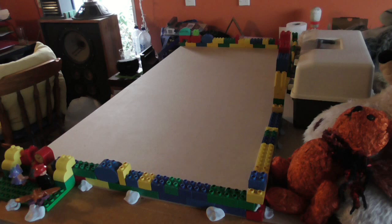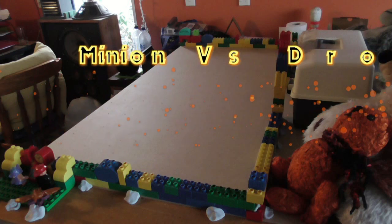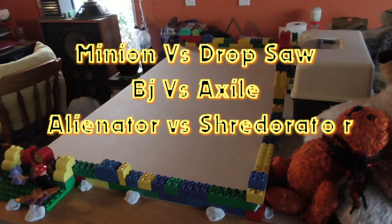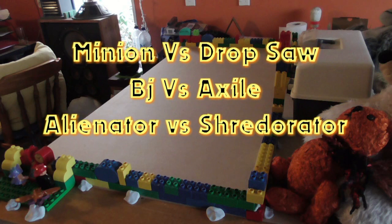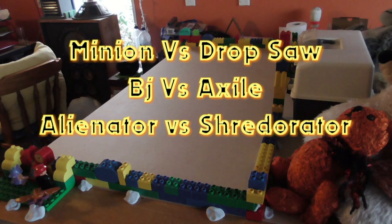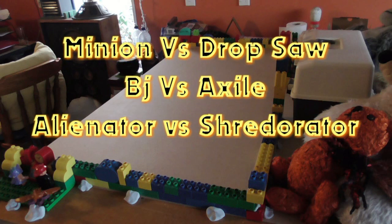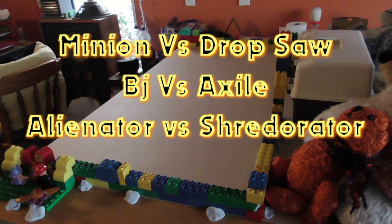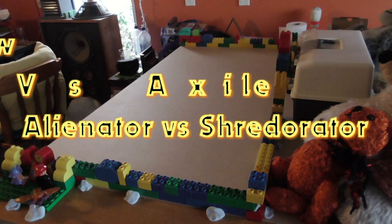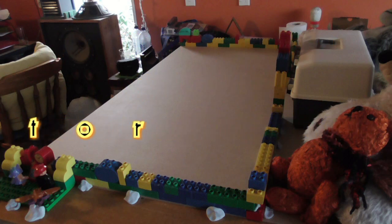Let's take a look at the battle board for round 1. We have Minion vs Dropsword, BJ vs Axile and Alienator vs Shredderator. The 3 robots that win their battles go through to round 2 and only 1 of the 3 losers will get a wild card to advance to round 2. Let the carnage begin.